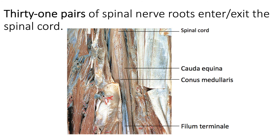When we look at a spinal cord specimen, we can see the cauda equina — all of those spinal nerves exiting the spinal cord and proceeding further down through the vertebral cavity. One by one, each spinal nerve exits via the vertebrae. The filum terminale is that single piece of connective tissue that anchors the spinal cord to the coccyx.